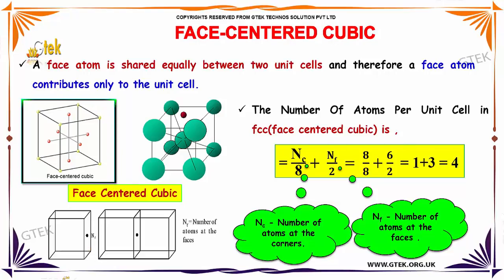You have 6 faces — 4 on the sides and top and bottom, giving 6 faces. So the total is 8 divided by 8 plus 6 divided by 2, which equals 1 plus 3, which is 4 atoms per unit cell.